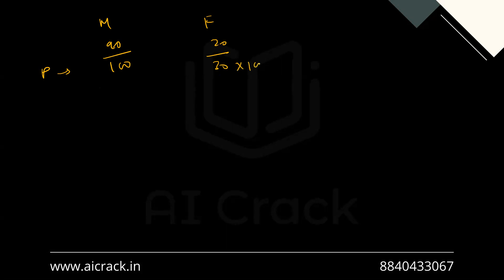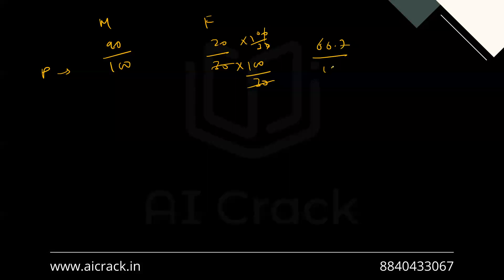If we multiply by 100 over 30, that converts the female proportion to the same base of 100. So that becomes 200 by 3, which is 66.7 out of 100. So the difference for region P is 90 minus 66.7, which is approximately 23.